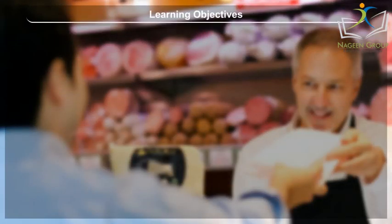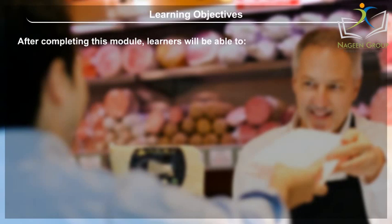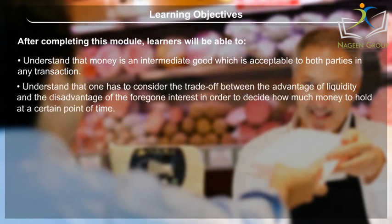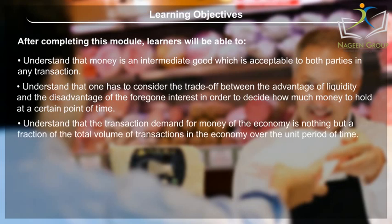Learning Objectives. After completing this module, learners will be able to understand that money is an intermediate good which is acceptable to both parties in any transaction. Understand that one has to consider the trade-off between the advantage of liquidity and the disadvantage of the foregone interest in order to decide how much money to hold at a certain point of time. Understand that the transaction demand for money of the economy is nothing but a fraction of the total volume of transactions in the economy.